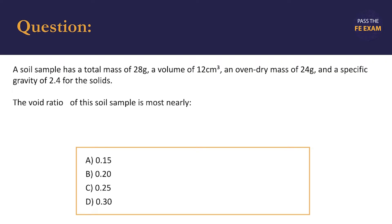Enrique, take it away. In this civil engineering soils problem, we're told that a sample has a total mass of 28 grams, a volume of 12 cubic centimeters, an oven dry mass of 24 grams, and a specific gravity of 2.4 for the solids. We're asked to determine the void ratio of the soil sample and are provided with the following answer choices.